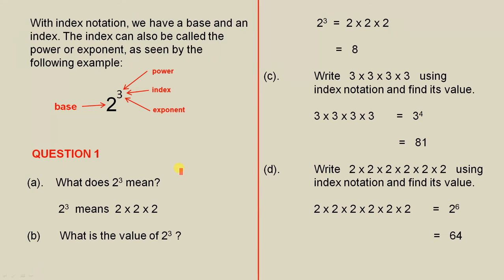Now let's do some questions to see how we deal with this type of situation. Question 1. What does 2 to the power of 3 mean? We can also say 2 cubed. 2 to the power of 3, or 2 cubed, means 2 times 2 times 2. That's telling us that the base of 2 is multiplied by itself 3 times.